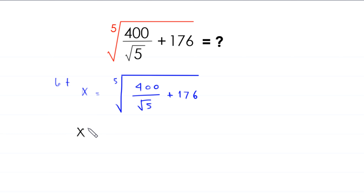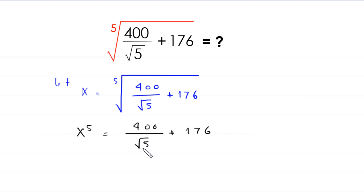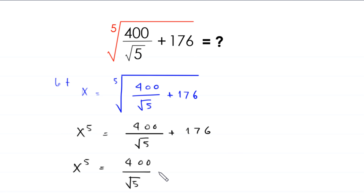If we take a 5th power on both sides, this becomes x to the power 5 equals 400 divided by (root 5 plus 176). Now we rationalize the denominator of this expression. To rationalize, we multiply and divide by root 5, so the denominator root 5 plus 176 remains, and we multiply numerator and denominator by root 5.